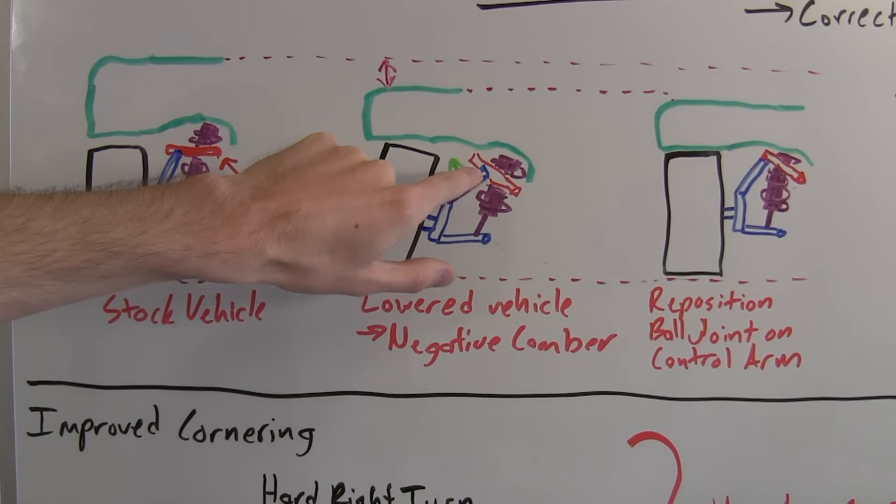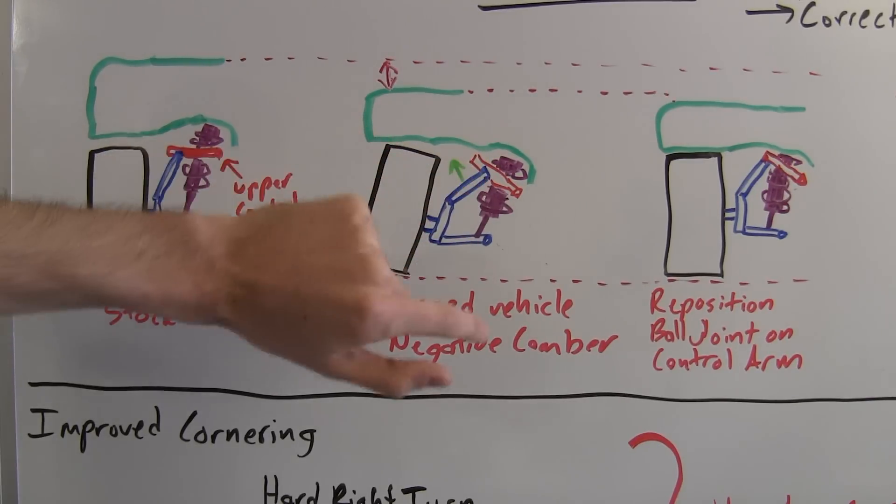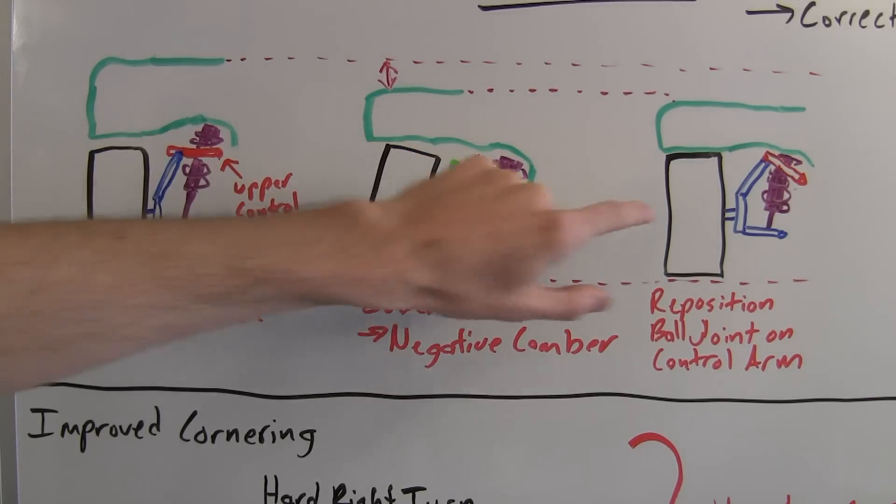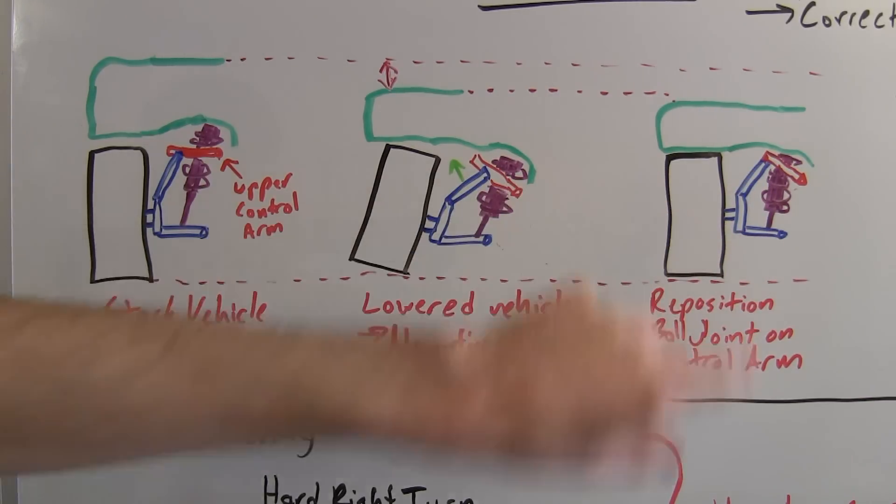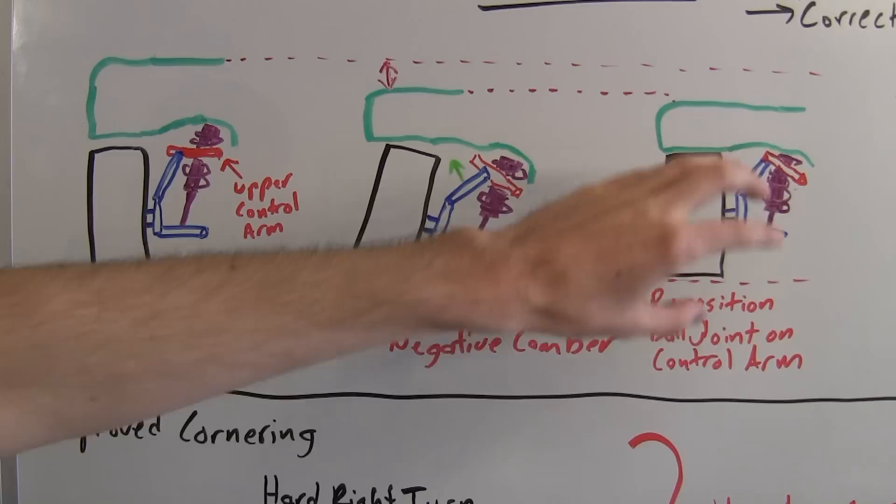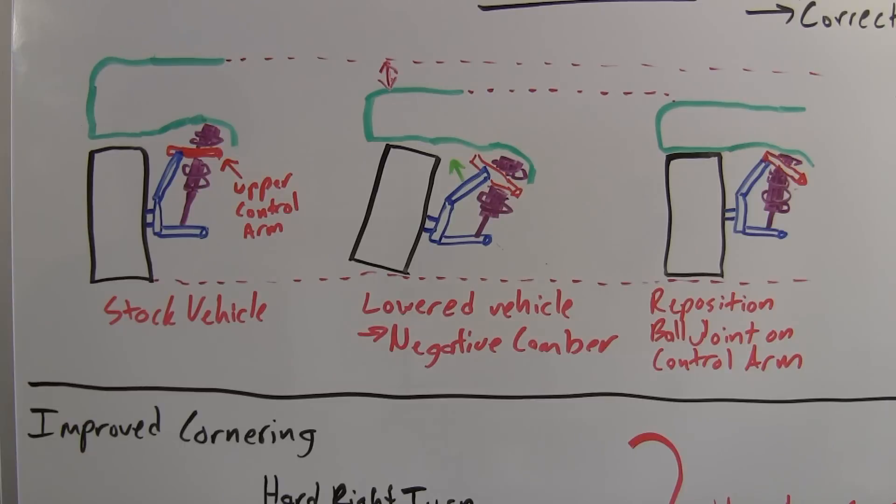What you're going to do is adjust this knuckle where it connects here, the ball bushing on the control arm. You're going to push that forward, and as you push that forward you can see it straightens out the tire. So you can lower your vehicle and have the tire at the same recommended wheel alignment camber that the manufacturer suggested.